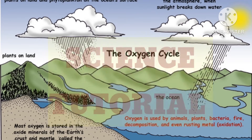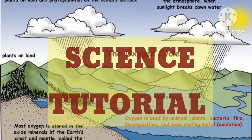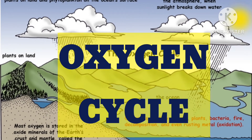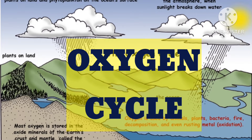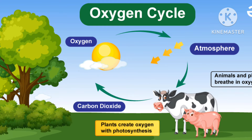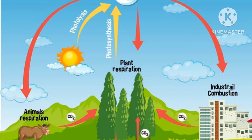Hello students and parents, welcome back to my channel with another science tutorial video. Today I am going to explain with a diagram one of the most important topics of biology — that is the oxygen cycle. The oxygen cycle refers to the movement of oxygen through the atmosphere, biosphere, and lithosphere. It begins with photosynthesis in green plants, which in the presence of sunlight release oxygen back into the atmosphere for humans and animals to breathe. The scientific diagram of the oxygen cycle is one of the most important diagrams for a biology exam, so let's see how to draw it in an easy manner.